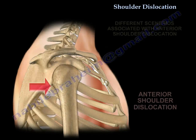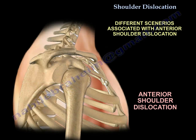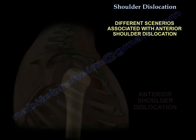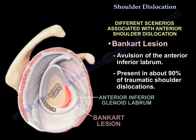Let's go through the different scenarios we can see during anterior shoulder dislocation. If you have an avulsion of the anterior inferior labrum, which is present in about 90% of traumatic shoulder dislocations, that is a Bankart lesion.